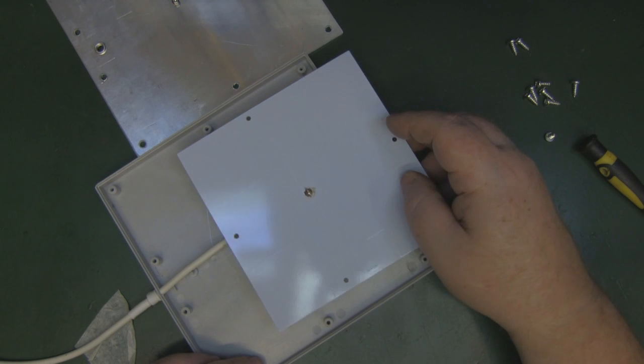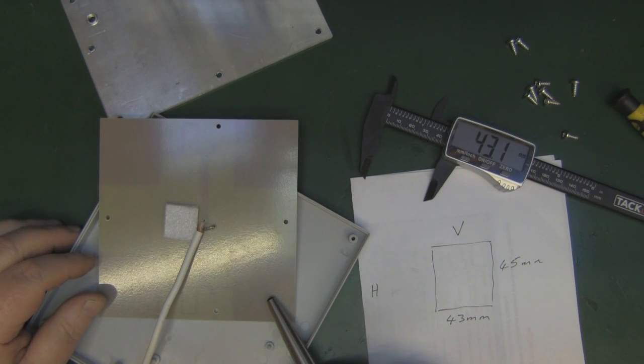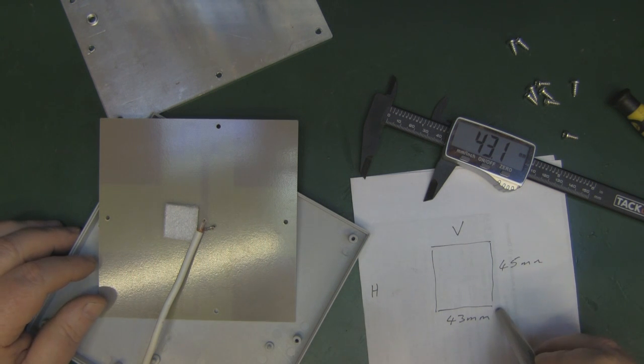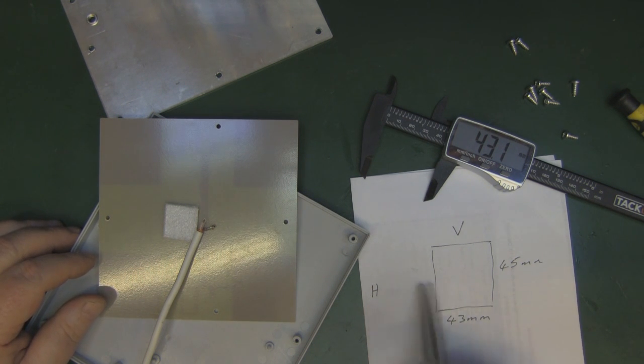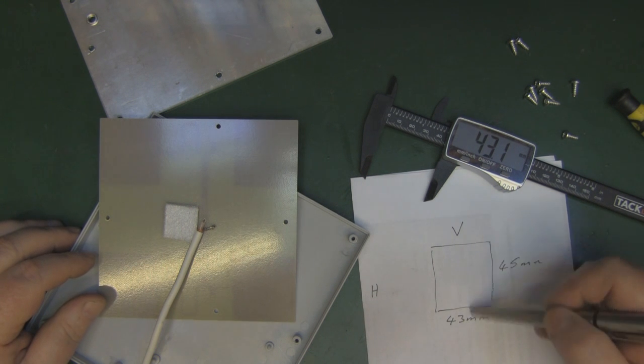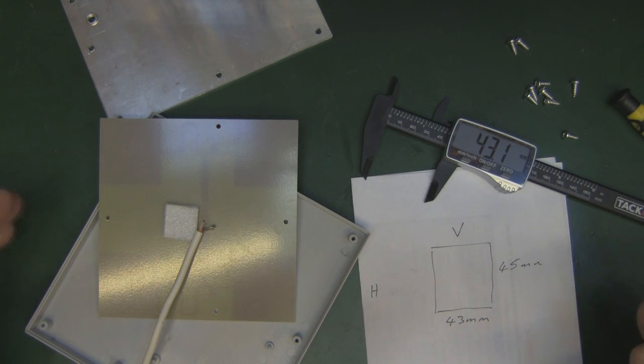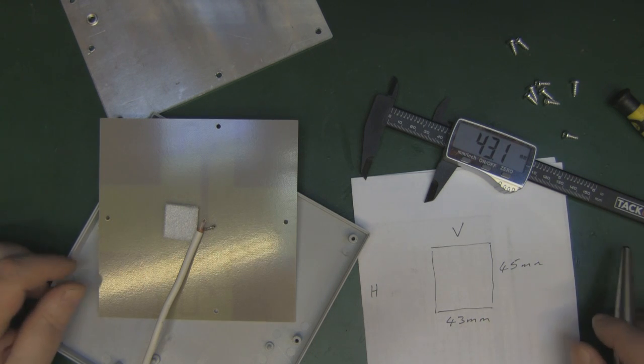I've just measured the elements using the calipers and it's a pretty standard sizing for 2.4 GHz. We've got 45 millimeters by 43 millimeters here. This is the horizontal plane and that's the vertical plane, so pretty standard measurement. You can find that kind of measurement on lots of designs online.